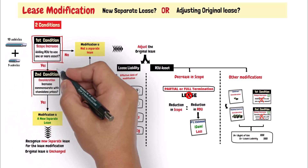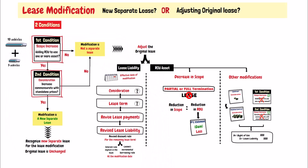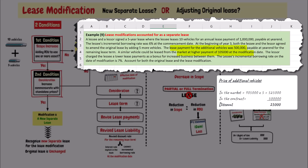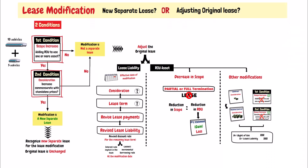The second condition: is the increase in the consideration for the lease commensurate with the standalone price of the additional vehicles? The modified contract stated that the consideration for the additional 5 vehicles amounts to 500,000 — 100,000 per vehicle — payable annually. Although a similar vehicle can be leased in the market at 105,000, the lessor leased out the vehicles to the lessee at a discount to reward the lessee for the increased business with the lessor. That discount is not a material discount, so the second condition is met as well, and the increase in consideration for the additional vehicles is commensurate with the standalone price for the additional vehicles.